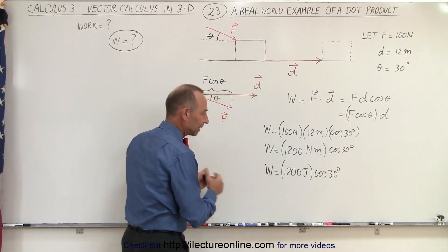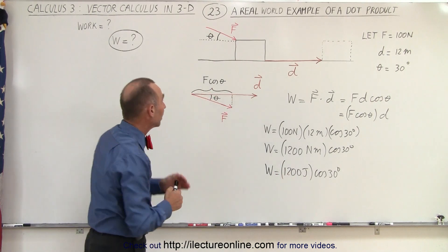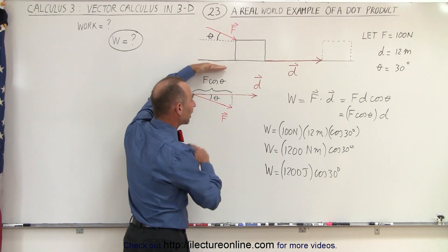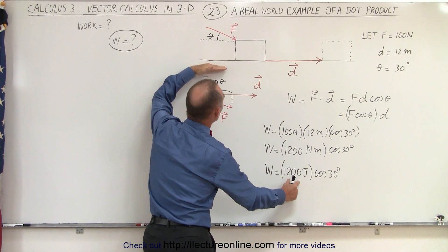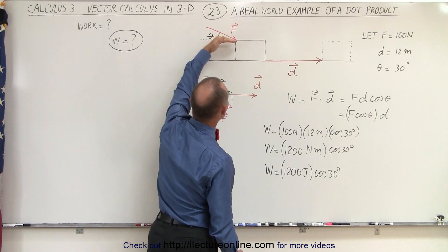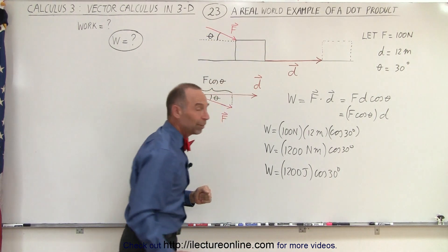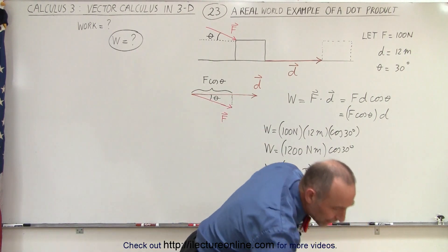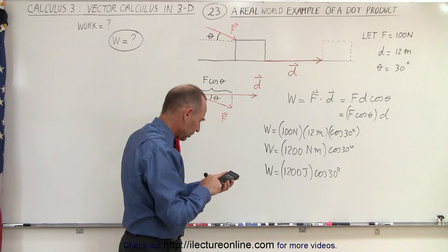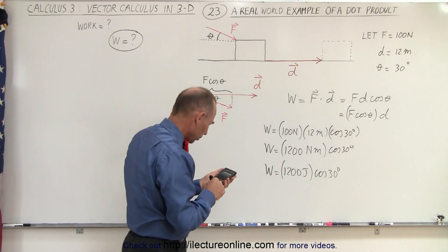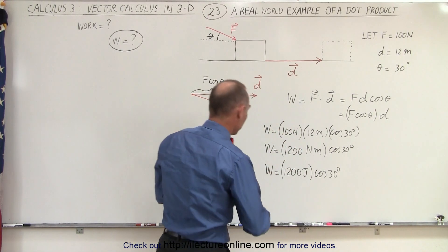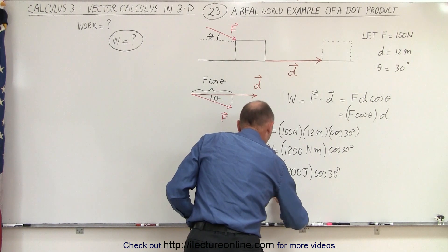Looking at this, 1200 joules would be the work done if the force were pushing in the same direction as the displacement. But because the force is acting at an angle of 30 degrees relative to the direction of displacement, the work done is a little bit less. Taking the cosine of 30 degrees gives 0.866, multiplied times 1200, which equals 1039 joules, rounded to the nearest joule.